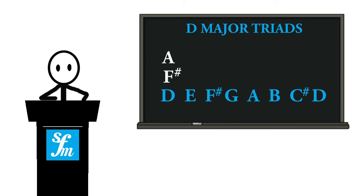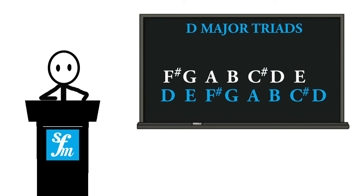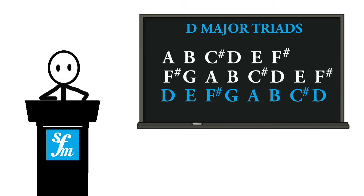From these notes, continue the D major scale: F sharp G A B C sharp D E F sharp, and A B C sharp D E F sharp G A. Now before you, you can see all the triads of D major.